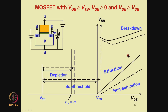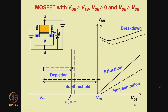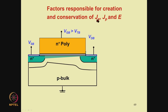Completing the regimes for a different value of VSB: if VSB is zero, this is your VTB, and the VDB axis starts from here — so non-saturation, saturation, and breakdown regions all shift accordingly when VSB changes. Let us put the charge conditions on the slide for VDB greater than VSB, assuming VGB greater than VTB so that there is some inversion charge at the interface. Let us now list the factors responsible for creation and conservation of electron current density Jn, hole current density Jp, and electric field E — for VDB greater than VDB_sat.